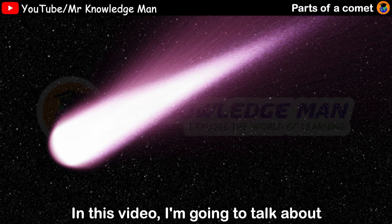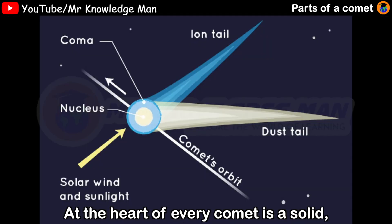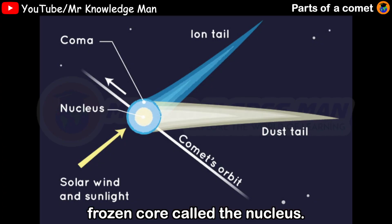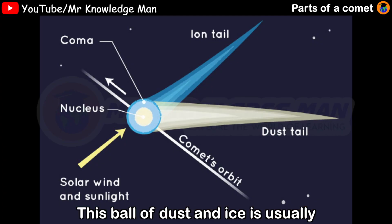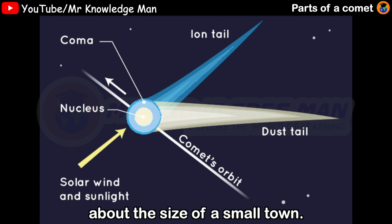In this video, I'm going to talk about what are the parts of a comet. At the heart of every comet, a solid frozen core is called the nucleus. This ball of dust and ice is usually less than 10 miles, 16 kilometers across.